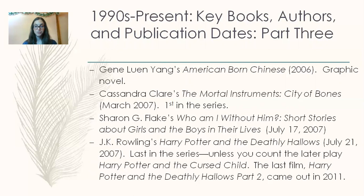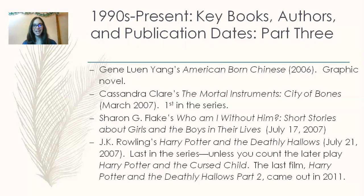J.K. Rowling's Harry Potter and the Deathly Hallows is published July 21st, 2007 — the last in the series, unless you count the later play Harry Potter and the Cursed Child. The last film came out in 2011. To give you an idea of how a character growing with their readers works: when I went to see the first Harry Potter movie, my mom drove me to the theater. When I went to see the last Harry Potter movie, it was my first time driving my friends in my car alone at night — so you can see that the characters come of age along with the reader.